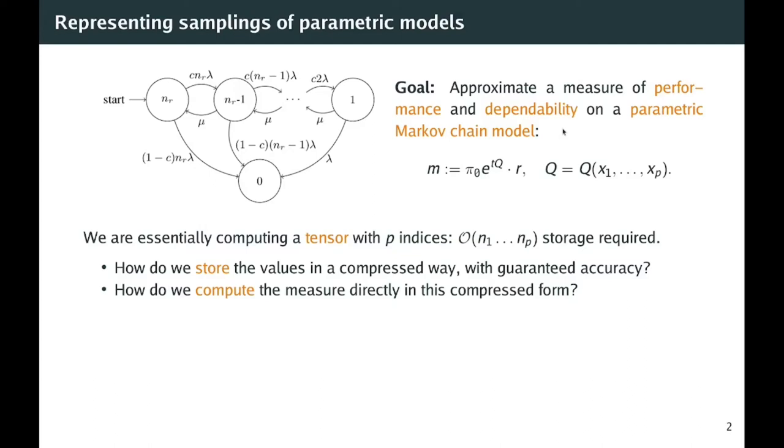I'm concerned with computing performance and dependability measures on a Markov chain model which depends on some parameters. Here they're denoted by x1 through xp, and they may be, for instance, failure rates or coverage, like you see in the fault-tolerant system here on the left.